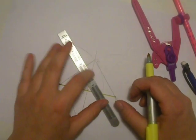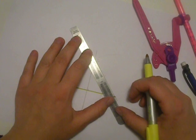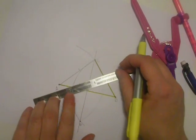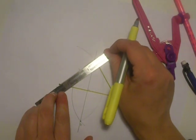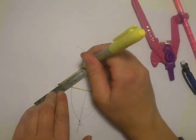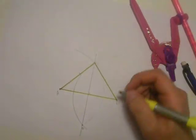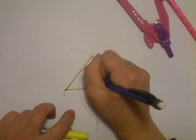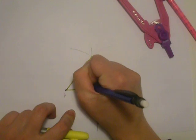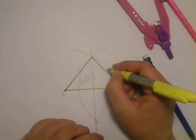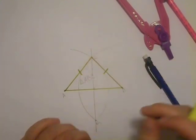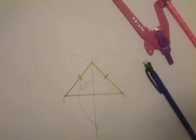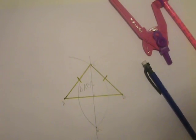So we have line AB, line CB, and line AC, creating triangle ABC, which is an isosceles triangle, because these two lines are congruent. And that's how you make an isosceles triangle using a compass and a straight edge.